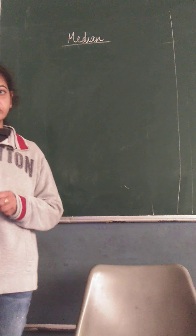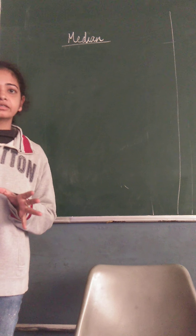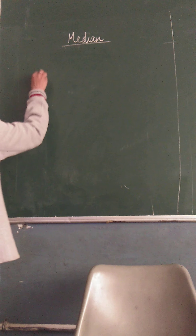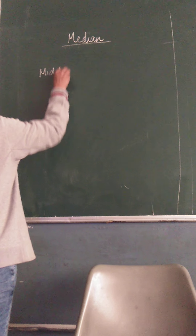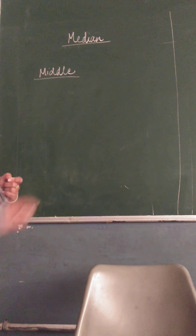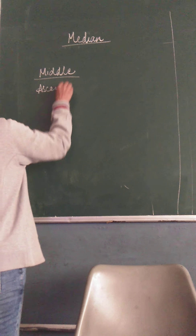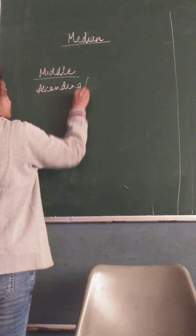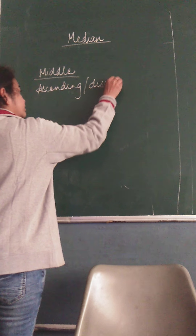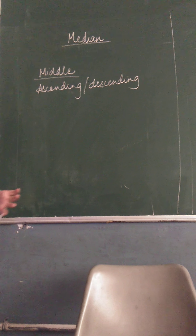Now, how to find out median? The first thing, as I said, is that it is the middle observation or number. The second thing is that it is of a data that is already arranged in ascending or descending order. This is also very important — that the data should be arranged.